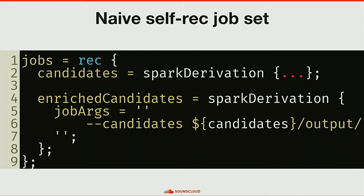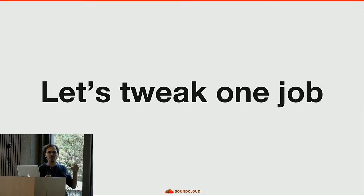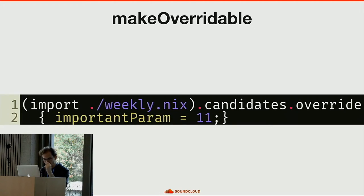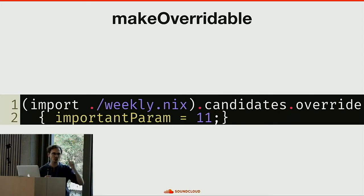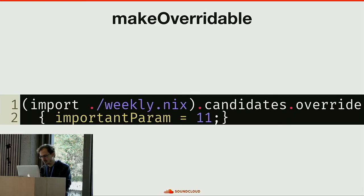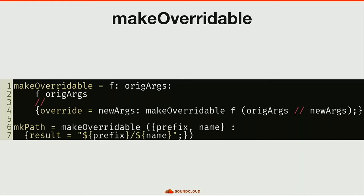This is already pretty nice — it's a nice language to define pipelines, allowing abstractions to reduce code and keep it clear and simple. It's already better than what I have in production. But I wanted more — I want to actually tweak jobs, the flexibility I was talking about earlier. I want to import my production definitions and override them, for example changing a parameter for candidates to 11 instead of 10, and to do that we can use the make overridable abstraction from nixpkgs.